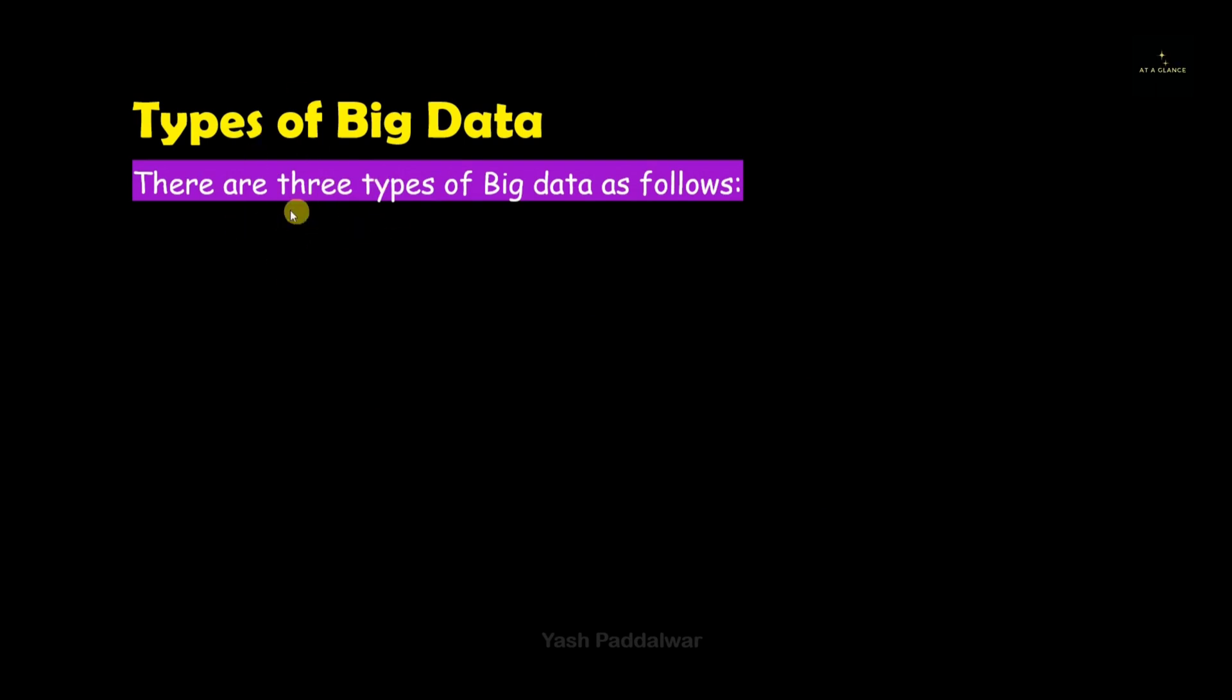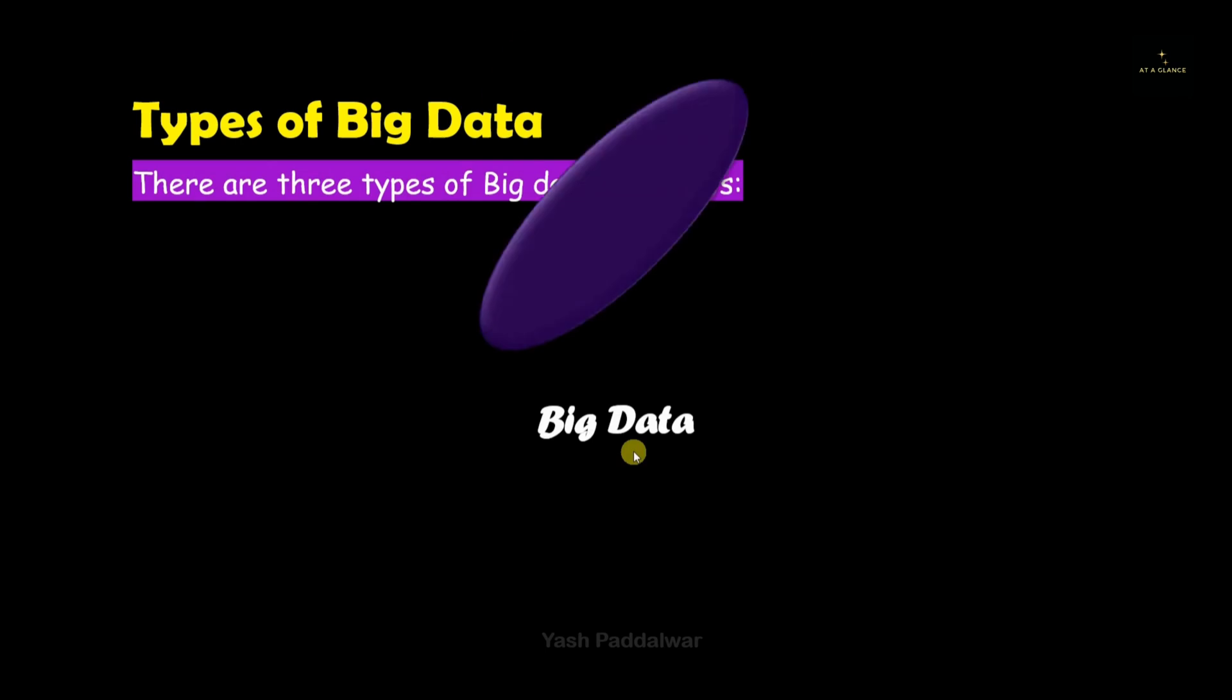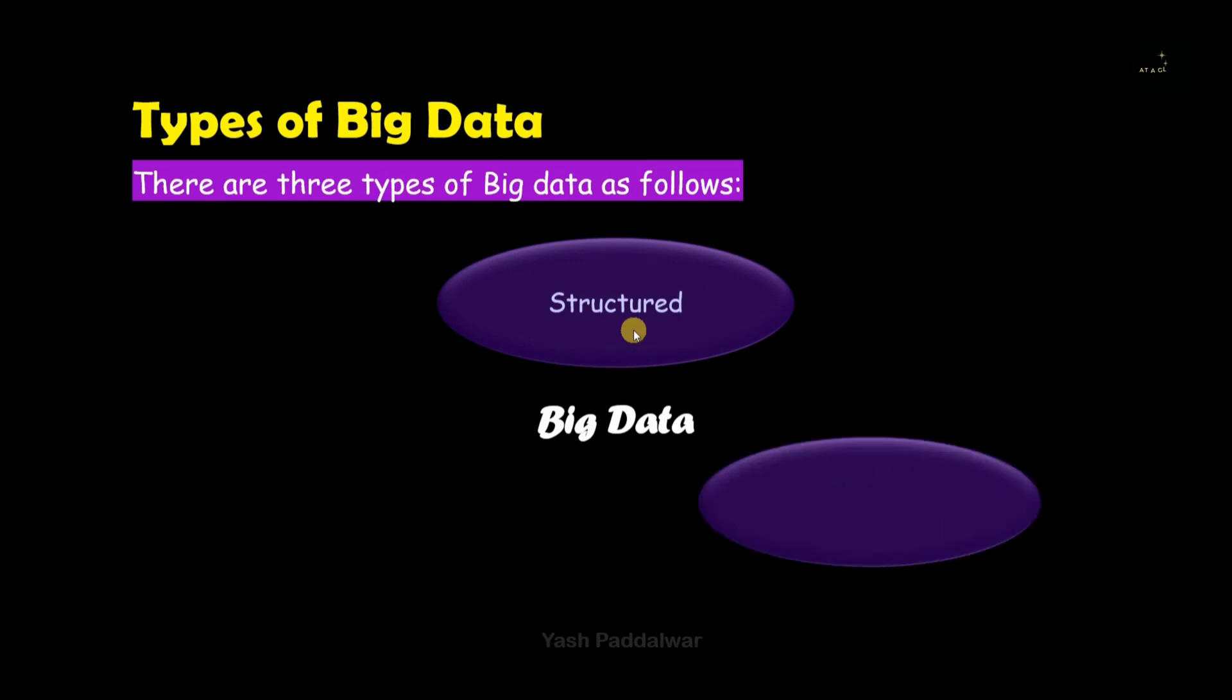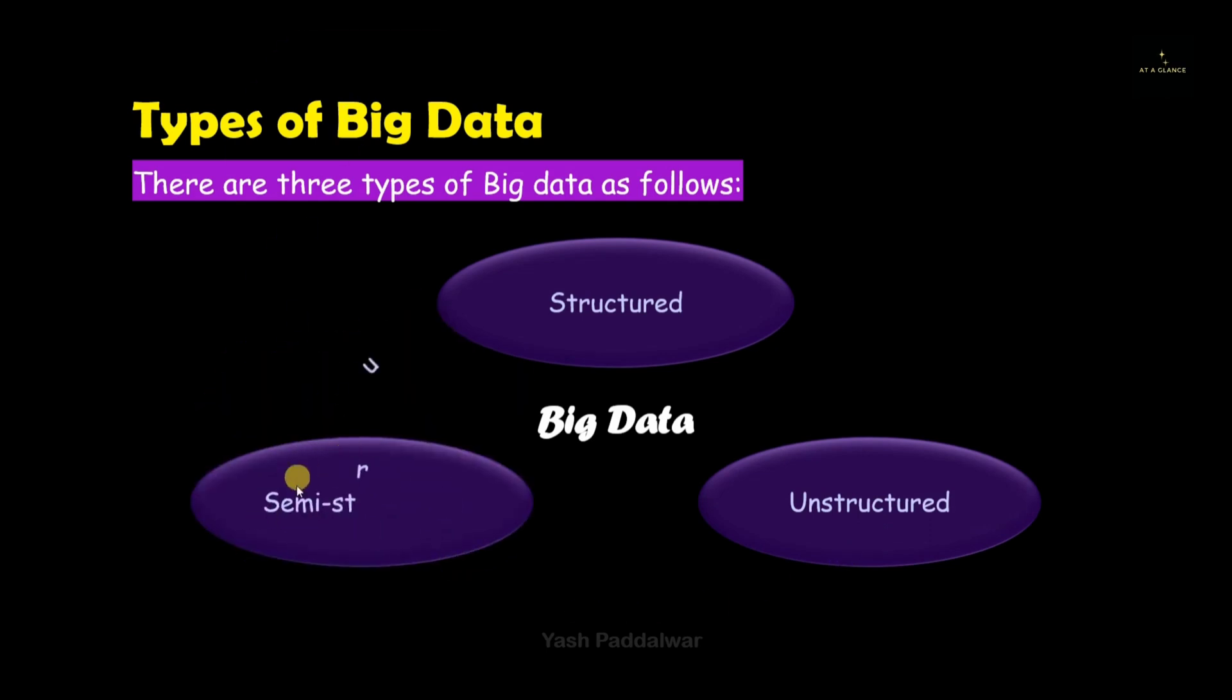So basically there are three types of big data. You might have heard of these concepts before. The first type of big data is structured big data. The name itself tells that it is going to be well-formatted data. Next type is unstructured data which is not at all formatted. And the last type of big data is semi-structured big data. It lies between the structured and unstructured big data.